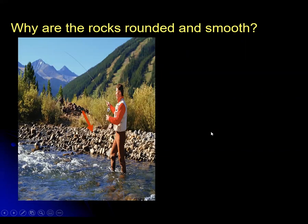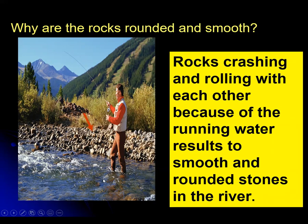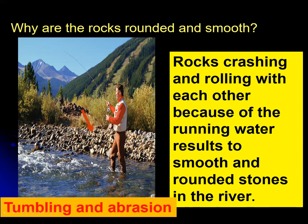Another question about weathering and erosion: why are rocks rounded and smooth in river banks? Why are they not flat or angular? The reason is that when water moves the rocks, the rocks cross and roll with each other because of the running water, resulting in smooth rounded stones. This rolling and crushing of rocks together is called tumbling and abrasion, which is what creates the rounded rocks in rivers.